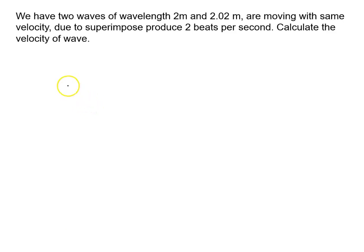We have two waves of wavelength 2 meters and 2.02 meters. Lambda 1 is 2 meters and lambda 2 is 2.02 meters. They are moving with the same velocity. Due to superimposition, they produce 2 beats per second.